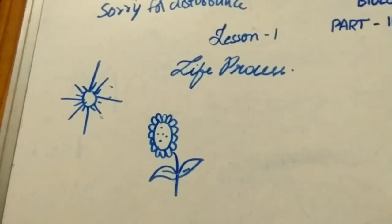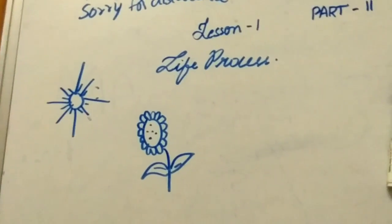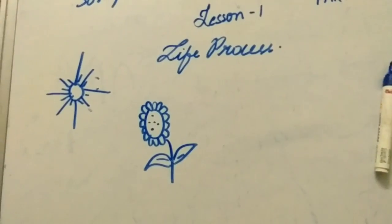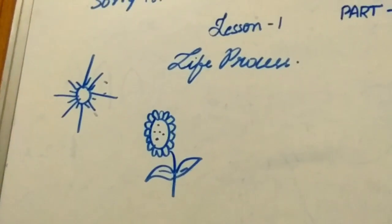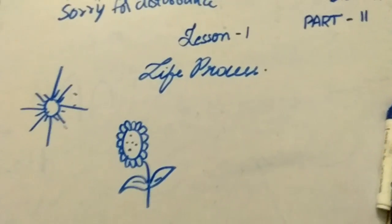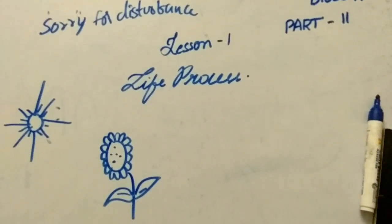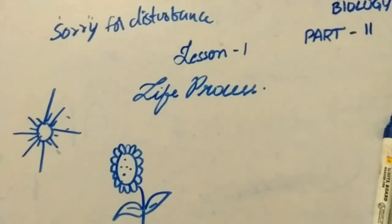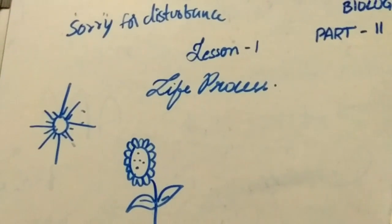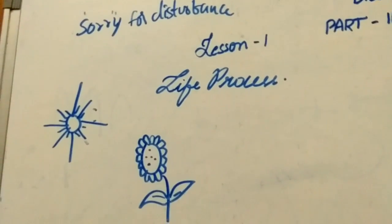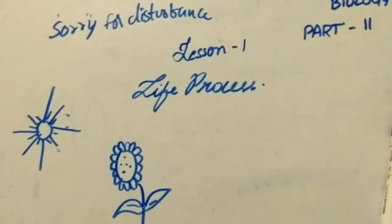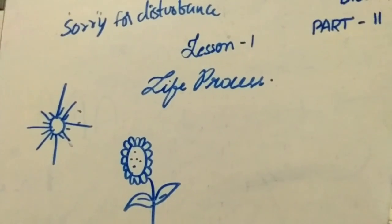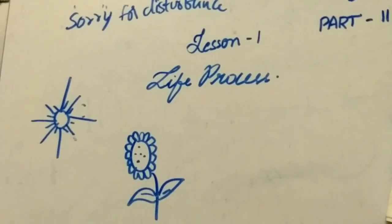The term nutrition comes from the word nutrient. A nutrient is an organic or inorganic substance that fulfills the energy requirement needed for a body to complete its life processes and to sustain its life on earth. Let us quickly complete this nutrition topic. There are different types of nutrition. We know that green plants make their own food, and non-green plants have to depend on green plants in order to gain food.